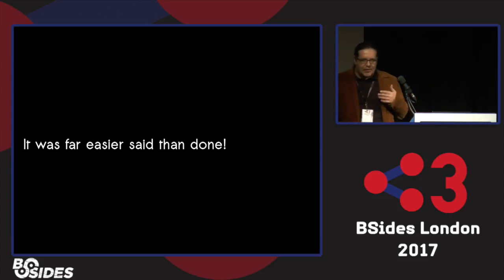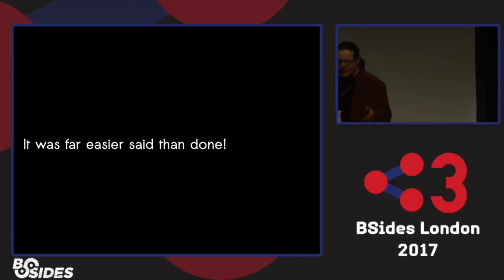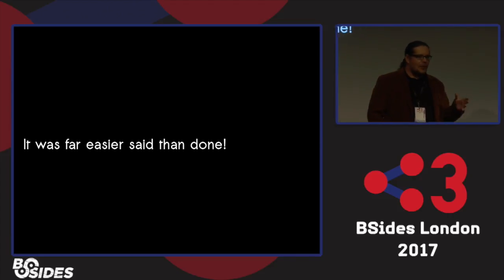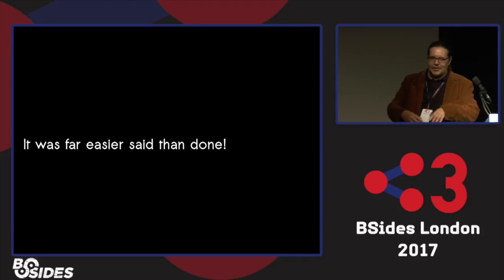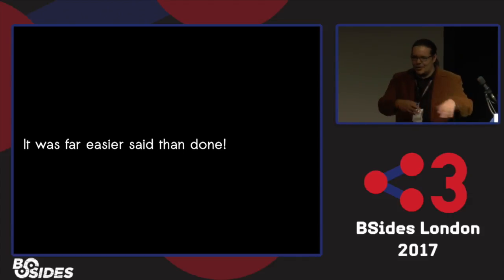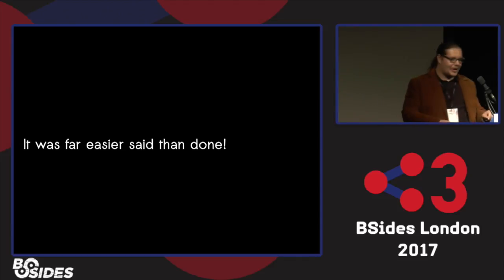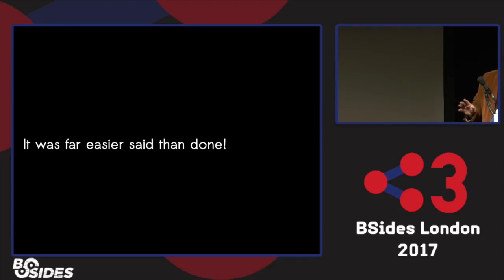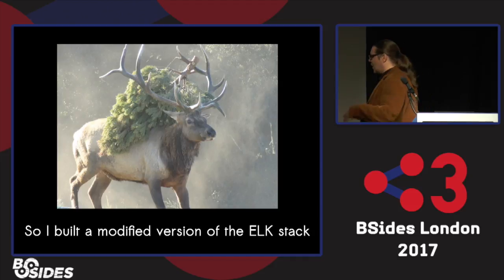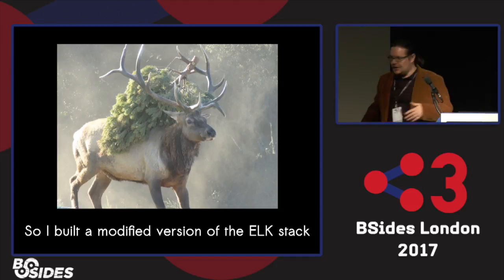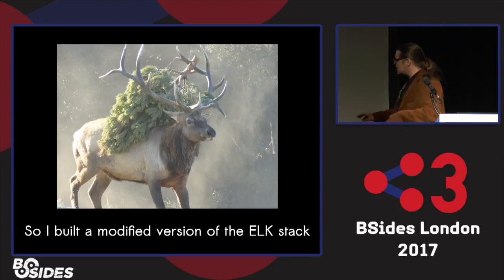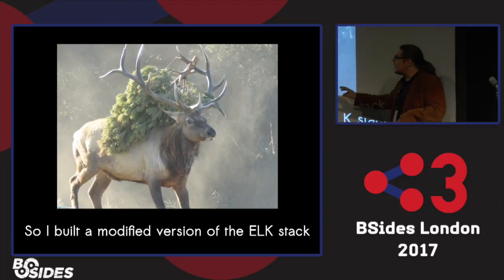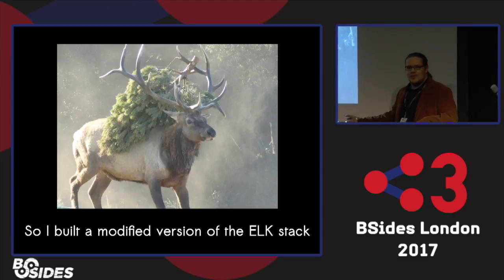The traditional way to build a search engine of data dumps would be to export the data into whatever the native DB was and put something in front of it. So if it was a Postgres dump, virtualize Postgres or MySQL and so on. I took a different approach: I modified the ELK stack — Elasticsearch, Logstash, and Kibana. Doing this project, I absolutely smashed Logstash into little pieces.